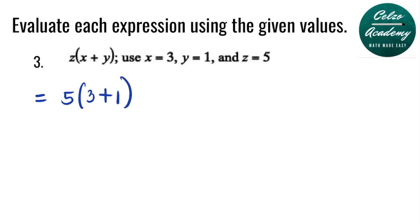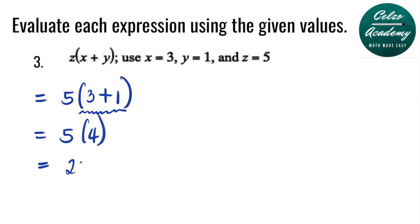Simplifying this numerical expression, we simplify first the grouping symbol: 3 plus 1, which is 4. So 5 times 4 gives us a final answer of 20.